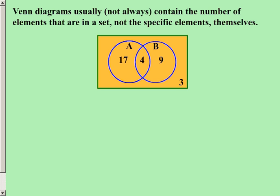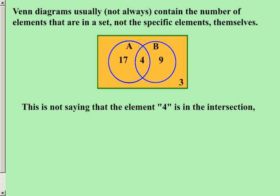As you can see, we have a set A and a set B, and there are numbers positioned throughout the Venn diagram. So let's be sure we understand exactly what these numbers are communicating with us. This is not saying that the element 4 is in the intersection. Now you can clearly see that the intersection is there, and there is a 4 inside of it, but that is not actually the value 4.